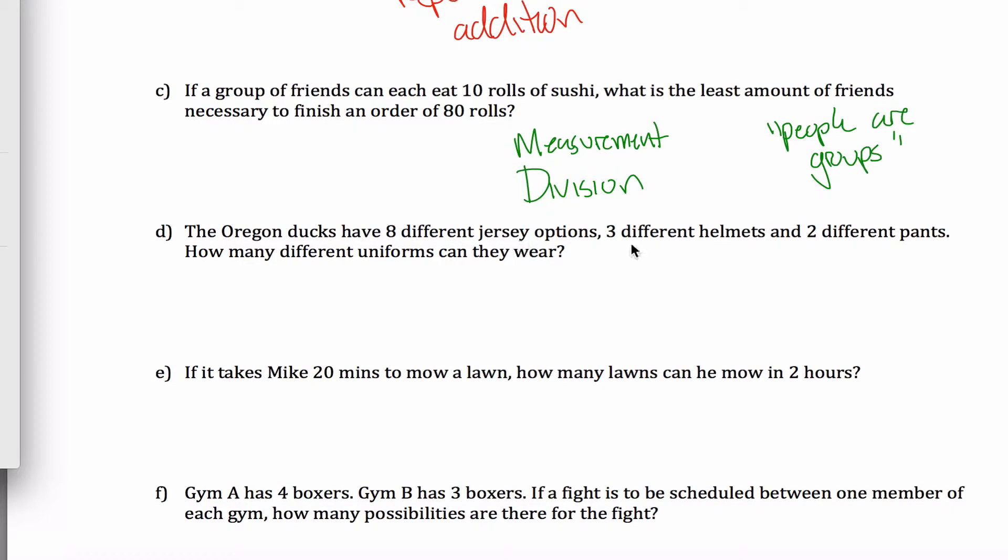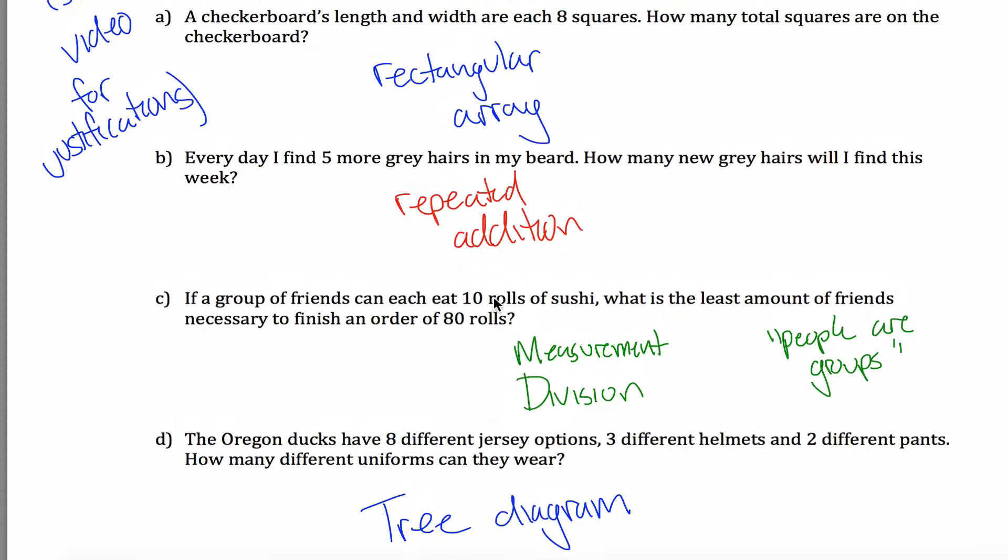The Oregon Ducks have eight different jersey options, three different helmets, and two different pants options. The point is they wear a lot of different uniforms. How many different uniforms can they wear? Well, this would have to be our tree diagram. This is the only method for multiplication that we have for multiplying more than two numbers together, at least all at once, of the models that we talked about.